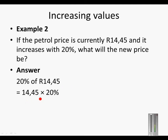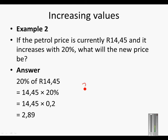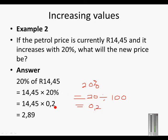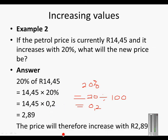14.45 times 20% is 14.45 times 0.2, and that gives us 2.89. Remember from yesterday's lesson, we established that 20% is equal to 20 divided by 100, because percent means divided by 100, and that gives us 0.2. So in today's lesson I'm going to directly use the decimal form instead of 20%. Therefore the price increases by 2.89.